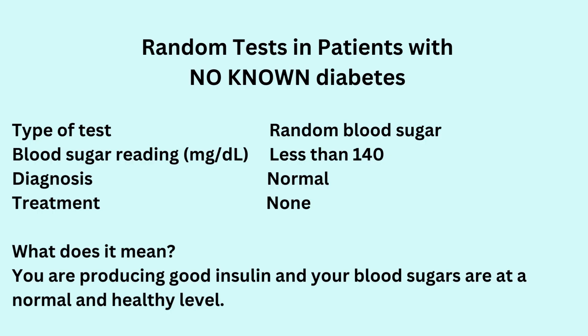If the blood test you had was a random blood sugar and you got a reading of less than 140 milligrams per deciliter, then your result falls under the normal range. At this stage you do not require any treatment. This means that you are producing good insulin and your blood sugars are at a normal and healthy level.